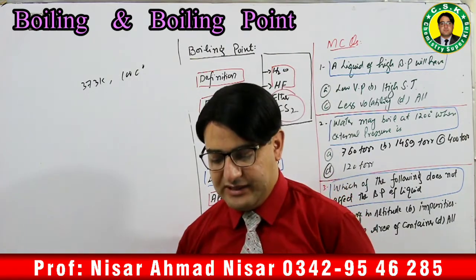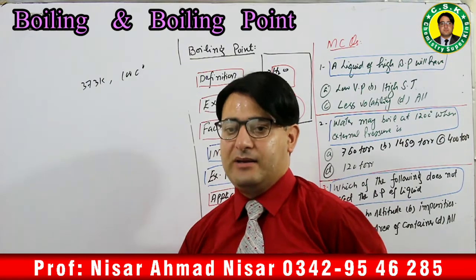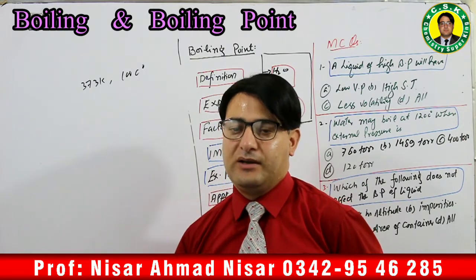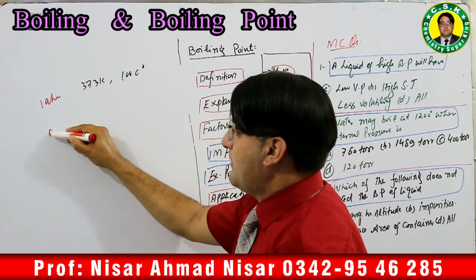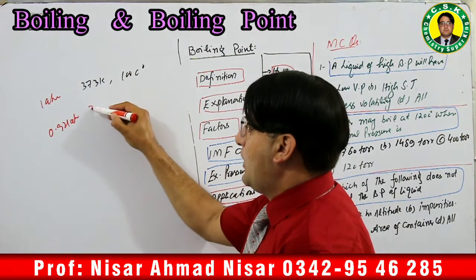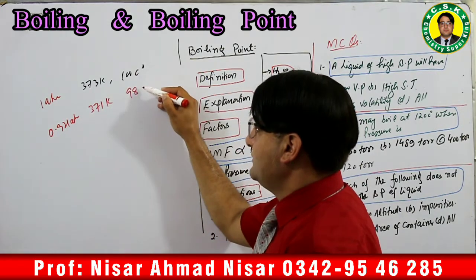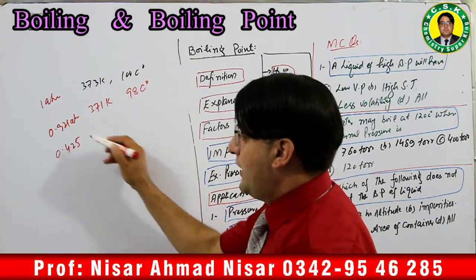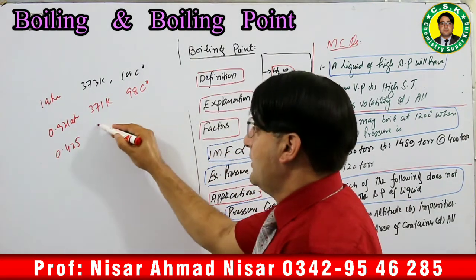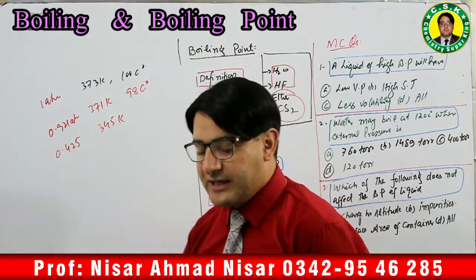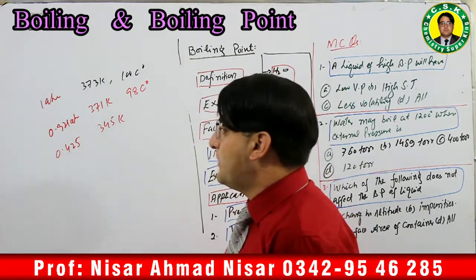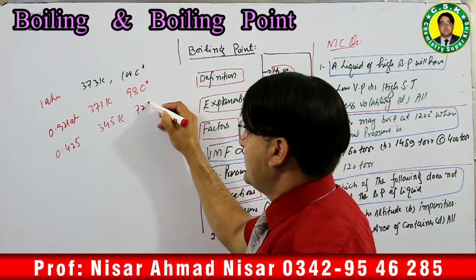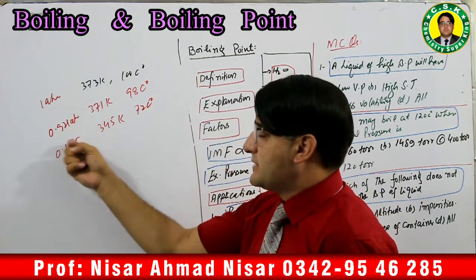At sea level, external pressure is 1 atm and water's boiling point is 373 K or 100°C. In Murree Hills, external pressure is 0.92 atm and water's boiling point is approximately 371 K or 98°C. On Mount Everest, external pressure is 0.425 atm and water's boiling point is approximately 345 K or about 72-73°C. So as external pressure decreases with altitude, the boiling point also decreases.